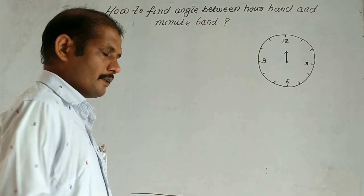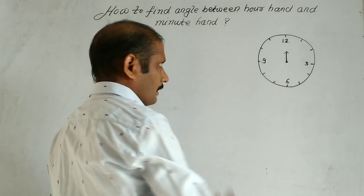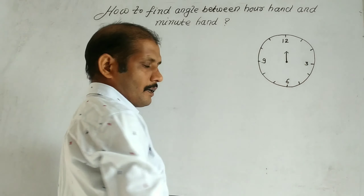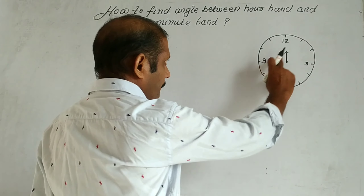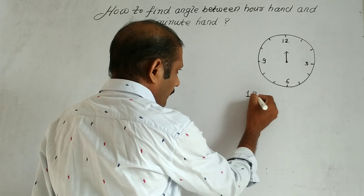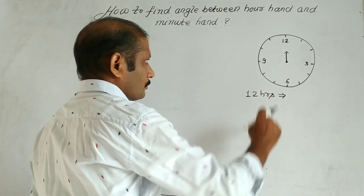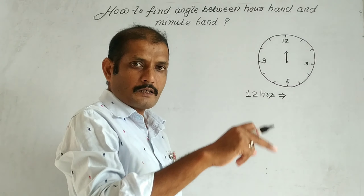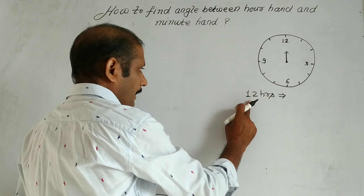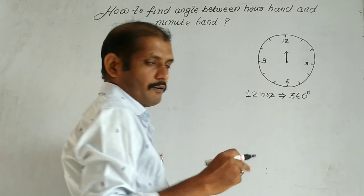We will see the basics. As you see the clock here, we will look at the hour hand. The hour hand completes one full circle. In 12 hours, our one complete rotation is 360 degrees. It means that the hour hand covers 360 degrees in 12 hours.